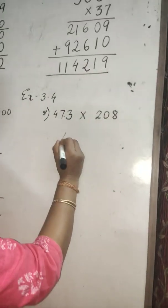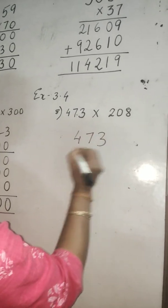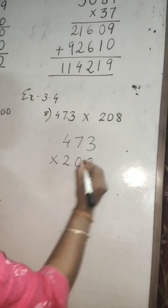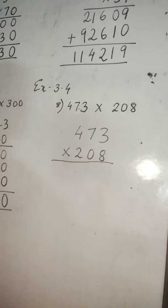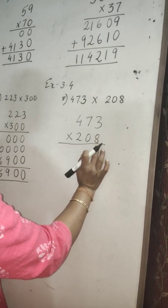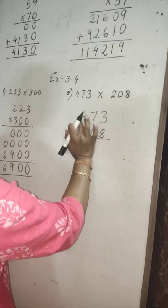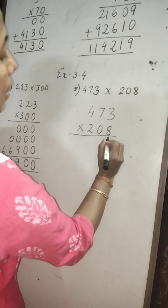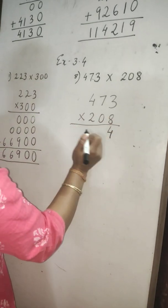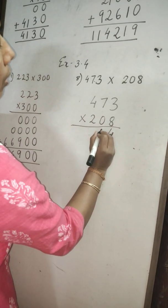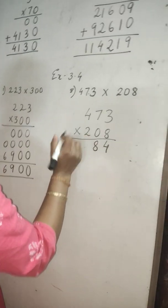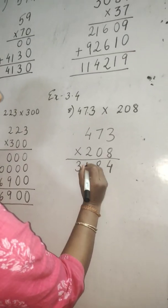Another example: 473 multiply into 208. This is also a 3-digit number. First, multiply with the number in the ones place — 8 is in the ones place. So multiply 8 with the 3-digit number. 8 threes are 24 — write 4, carry 2. 8 sevens are 56 plus 2 is 58 — write 8, carry 5. 8 fours are 32 plus 5 is 37 — wait, 34.